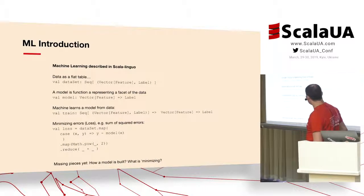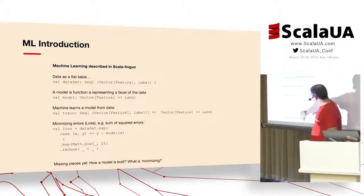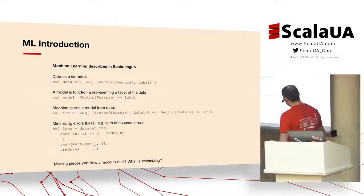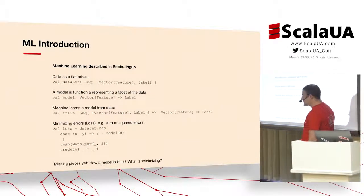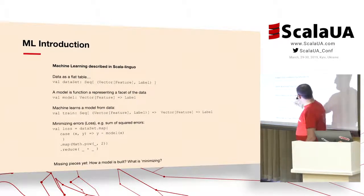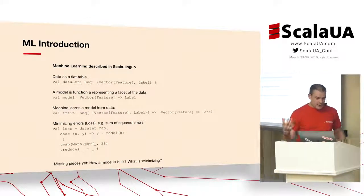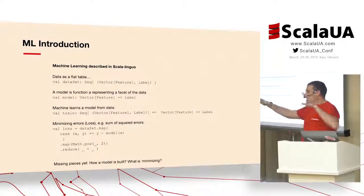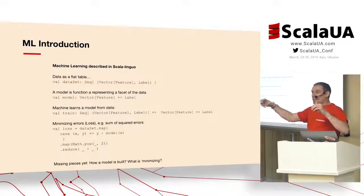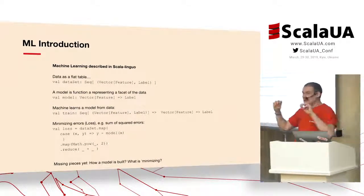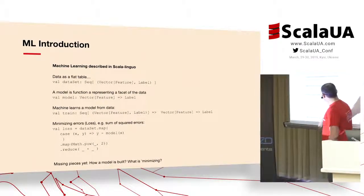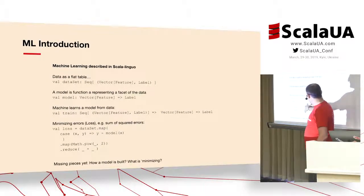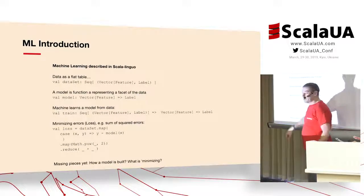Training is actually a function that generates this model function. The input is a dataset — a set of examples from the past — and you generate the function. The goal is minimizing the risk of being wrong in the future, minimizing what is called a loss. For example, the sum of squared errors: if you want to predict temperature, you want the difference between the real temperature and your prediction to be minimal across every day. You sum the squares of these differences and minimize.